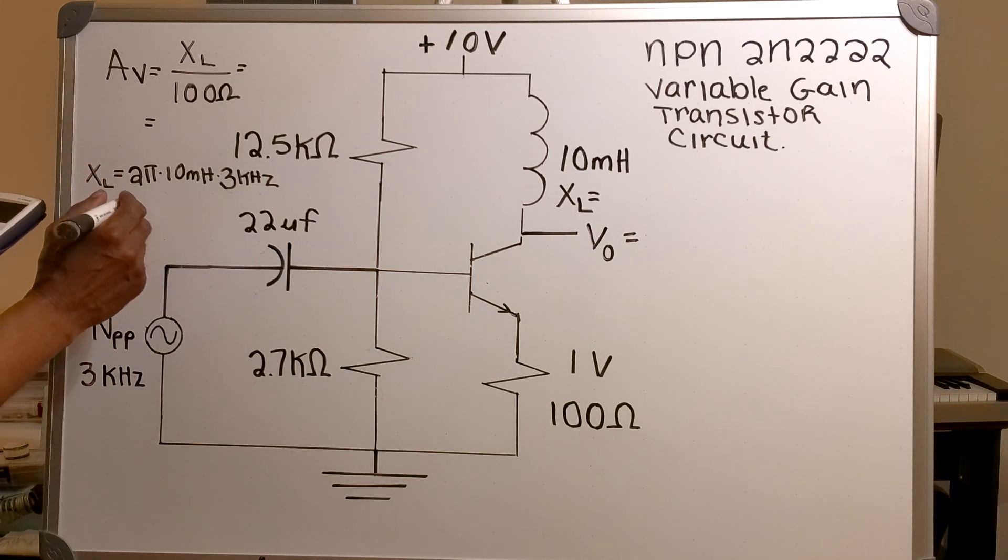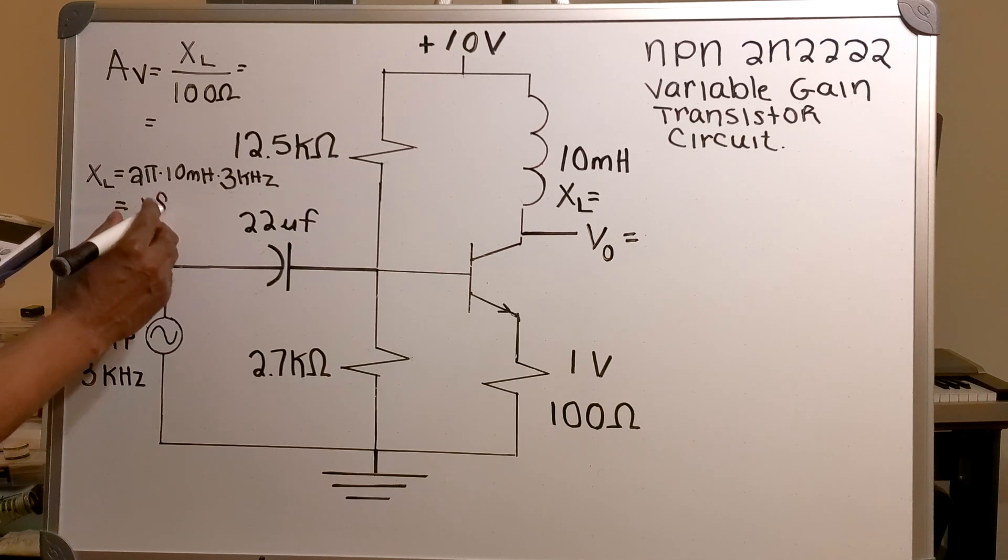So now I've got 2 pi times 10 millihenry times 3 kilohertz. Now I have an inductive reactance of about 188 ohms.